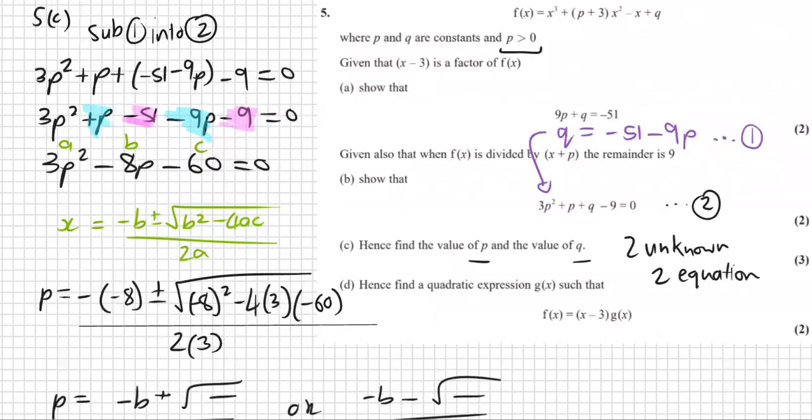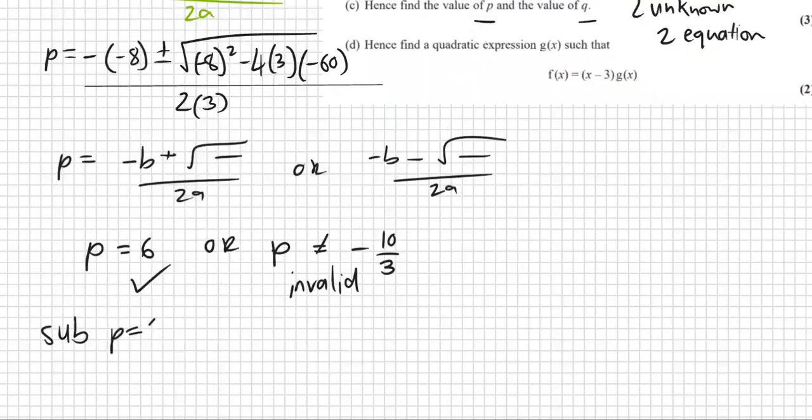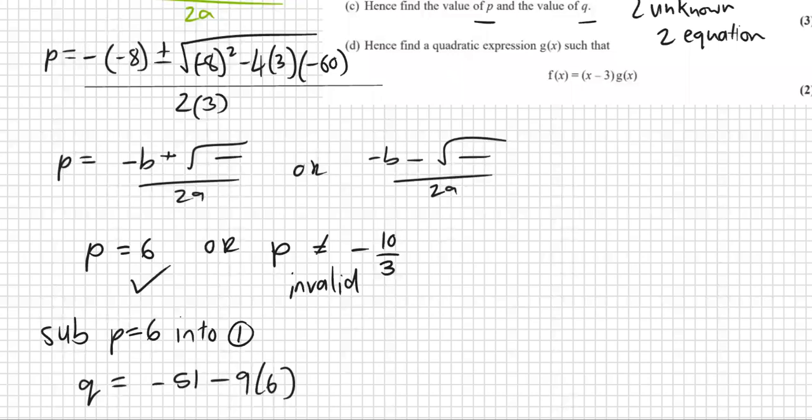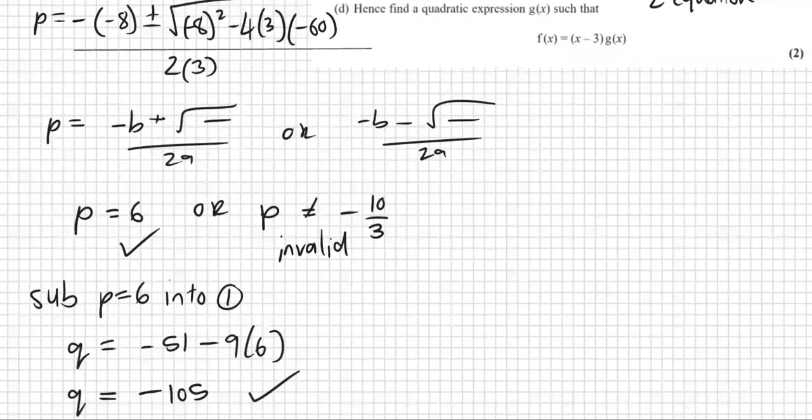Now we're not complete. We still need to find Q. Well, the last step, if we have that P is equal to 6, is we can sub the value of P equal to 6 into one of our equations. And I see that probably it's easy to sub it into equation one. So therefore, substitute P equals to 6 into equation number one. Therefore, our Q will equal negative 51 minus 9 times 6. Let me just recheck that at the top here. 9P, yes. 9 times 6, negative 51. I'll just put that in my calculator. I get negative 105 is my Q. That's the only Q value. And that was number C.